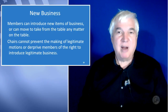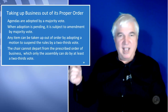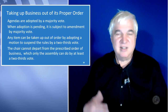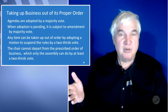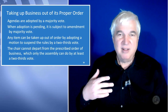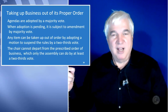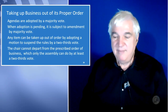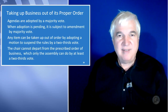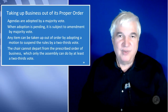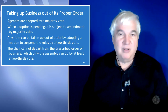Agendas are adopted by a majority vote. When the agenda approval point comes, it just takes a majority vote. That basically says a majority of the people in the room want to follow this order of business. When the adoption is pending, it is subject to amendment by majority vote. If the chair does not want to put new business on and they're supposed to, you can say 'I move that we add new business to the end of the agenda,' someone seconds it, and hopefully the majority will support you. That would pass by a majority vote. Once the agenda has been adopted, it takes a two-thirds vote to then deviate from it.